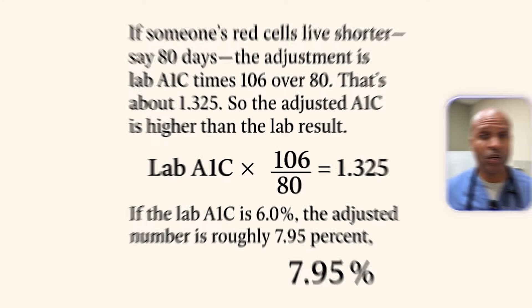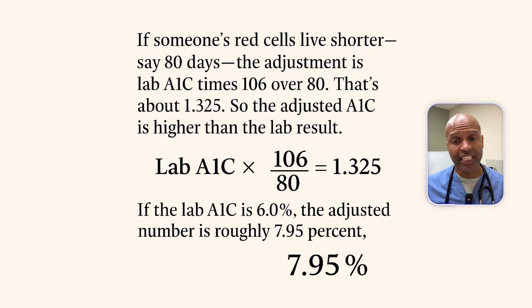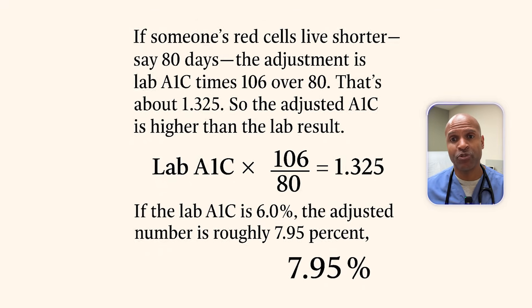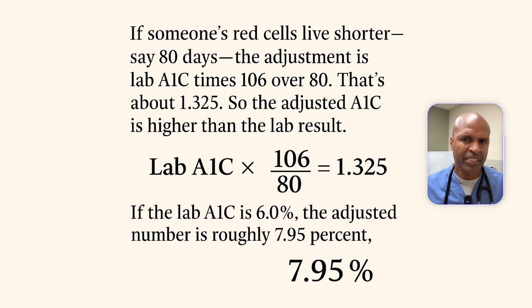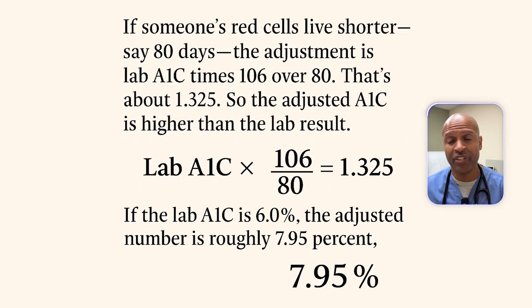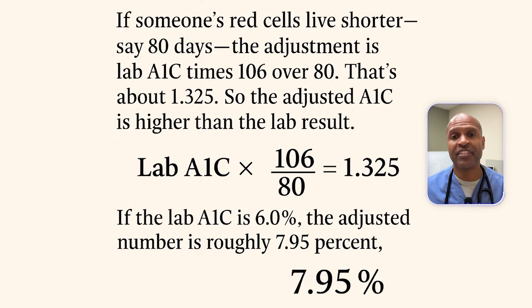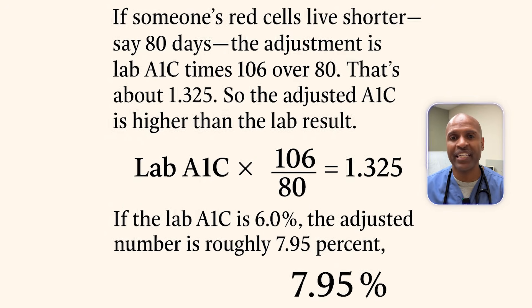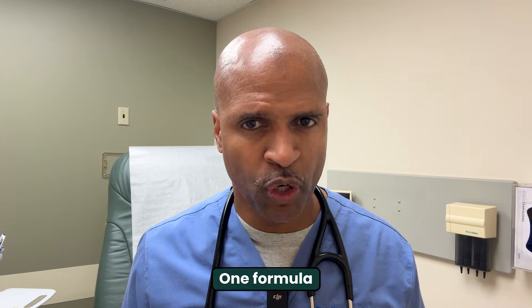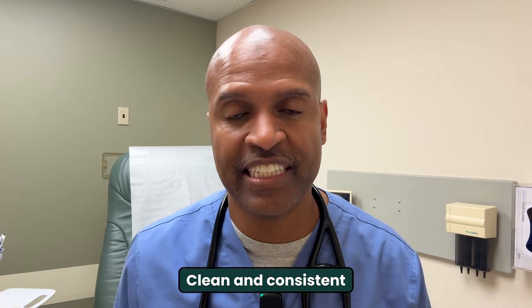Flip it the other way. If someone's red cells live shorter — say 80 days — the adjustment is lab A1C times 106 over 80. That's about 1.325, so the adjusted A1C is higher than the lab result. If the lab A1C is 6%, the adjusted value is roughly 7.95%, which keeps us from being falsely reassured when cells are turning over fast. One formula, two directions — clean and consistent.